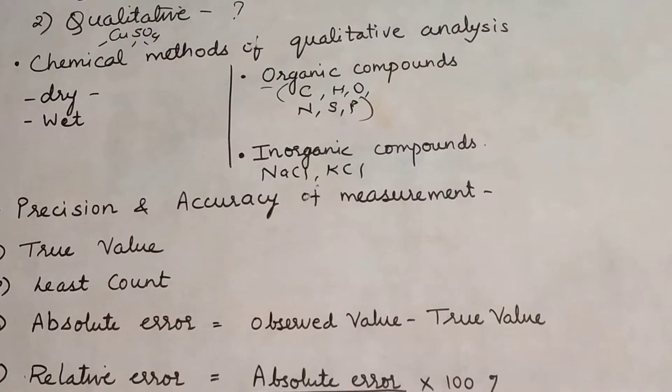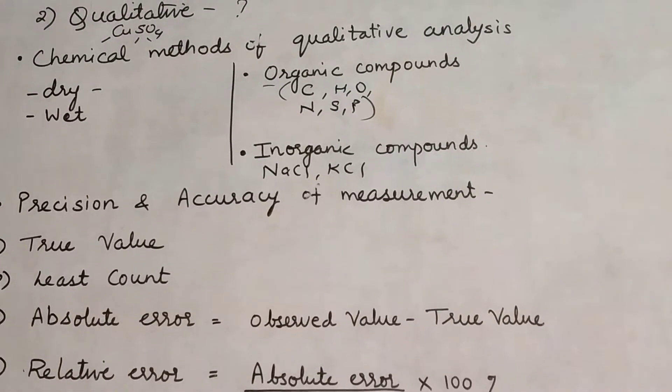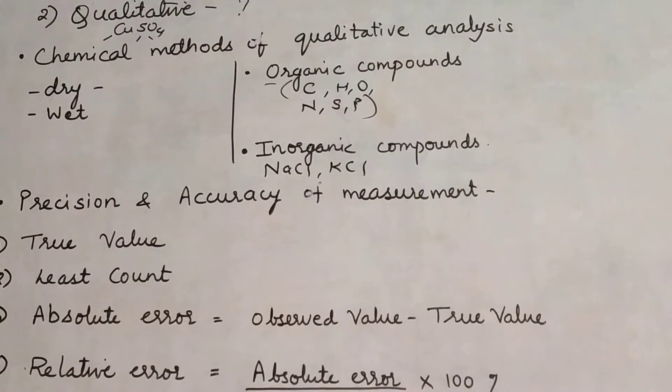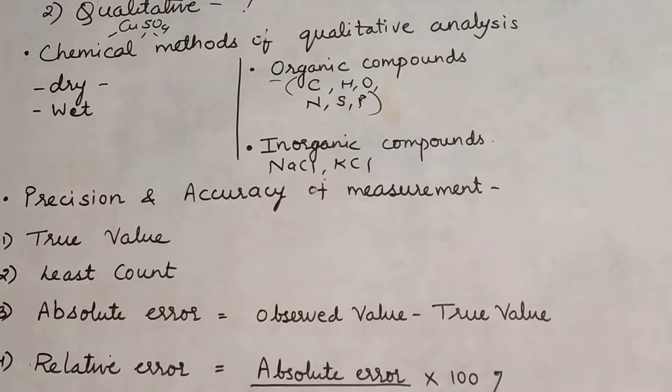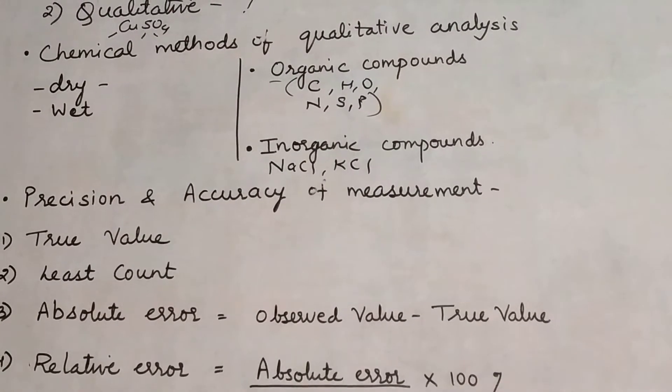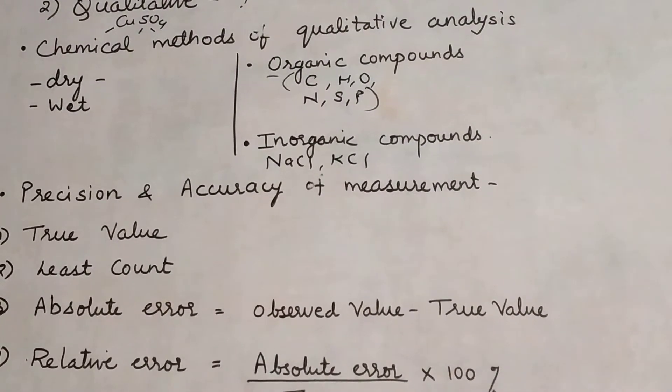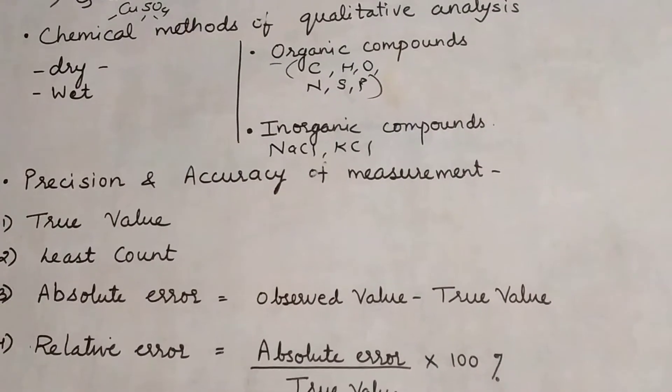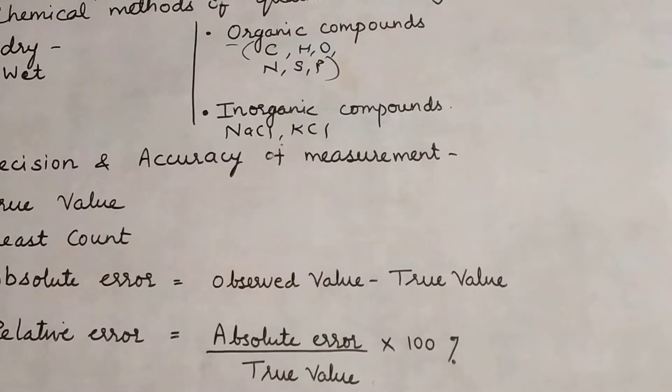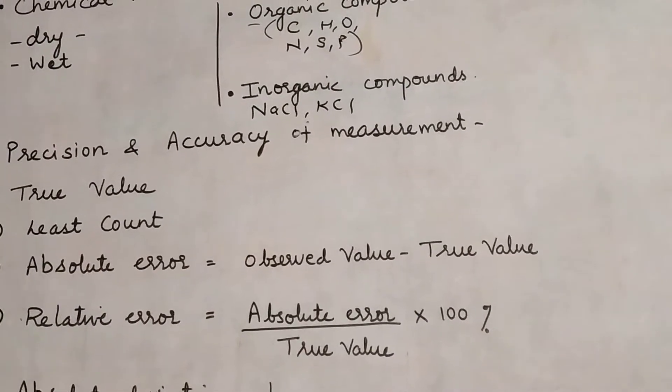When doing qualitative analysis of these compounds, if we want to do qualitative analysis of organic compounds, we find which elements are present. You find the melting point of that compound, boiling point of that compound. Such tests are carried out. Individual tests are there for sulfur, nitrogen, oxygen, hydrogen, carbon.